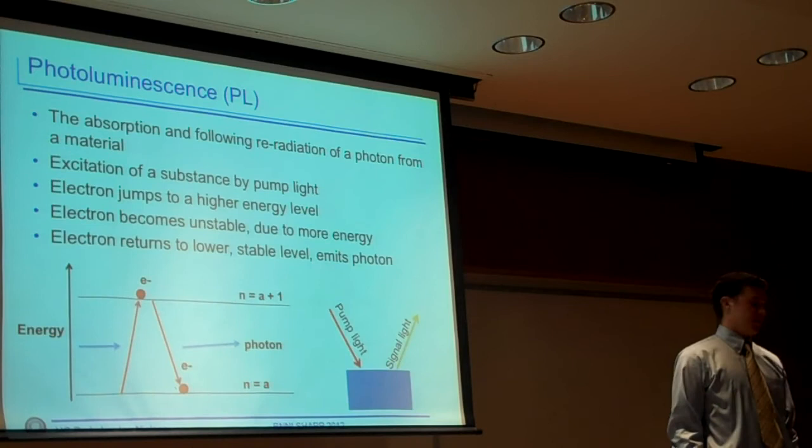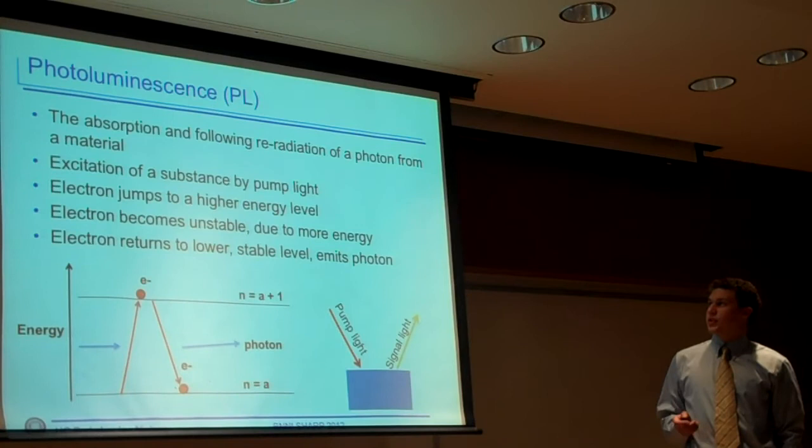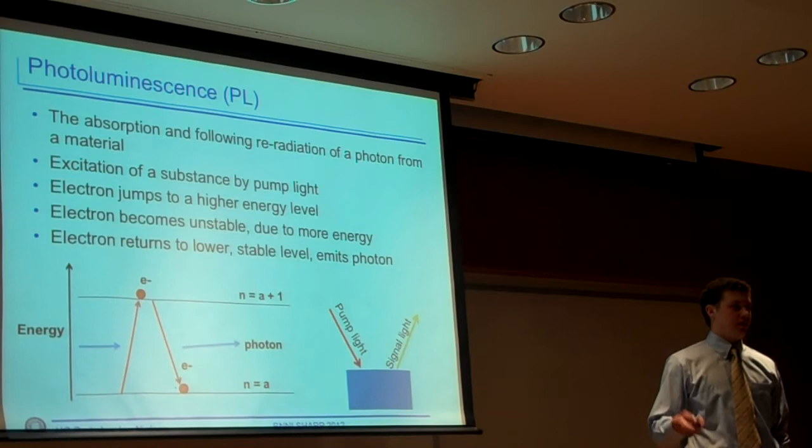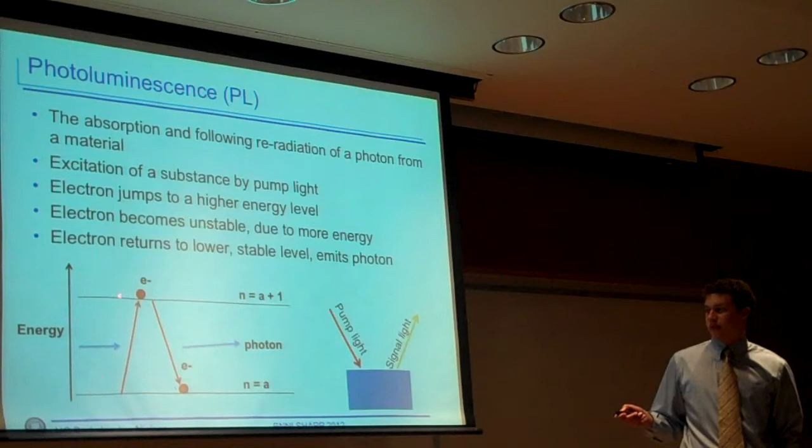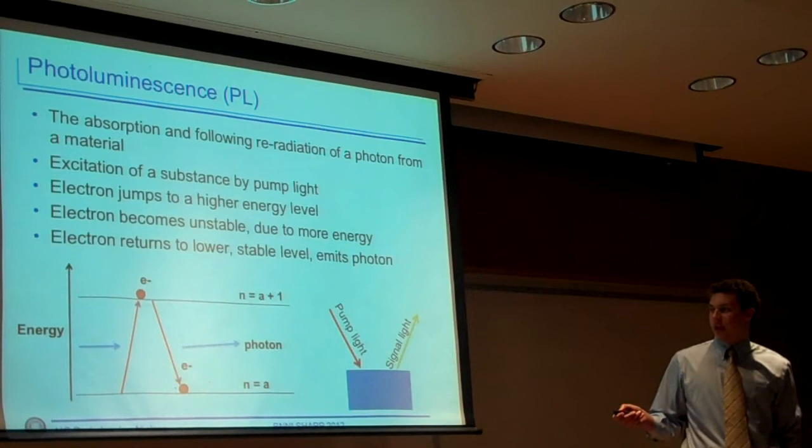This is the key to understanding, or not understanding, but recognizing a decent laser from a bad laser. In simple terms, it's the absorption and following re-radiation of a photon from a material. What actually happens is, once you shoot a pump light, or what we use as a laser, you shoot a pump light at a substance, the substance, an electron will absorb the photon shot at it, and it will go to a higher, unstable energy level. It wants to go back down to a stable energy level, so what it will do, it will jump back down, and in the process, re-emit a photon, which we call the signal light from the substance.